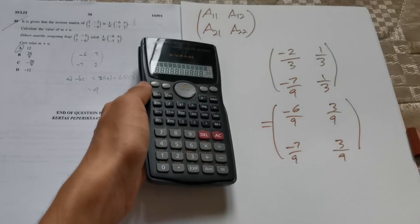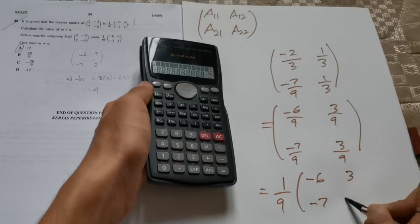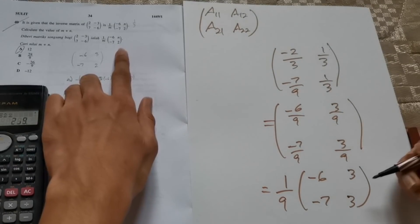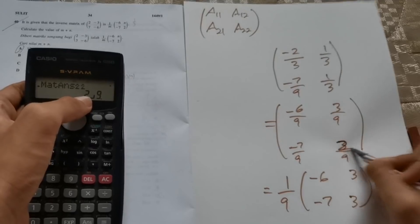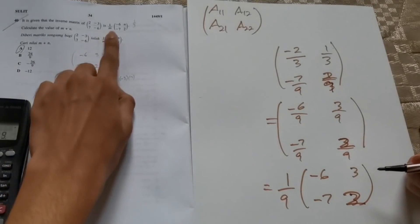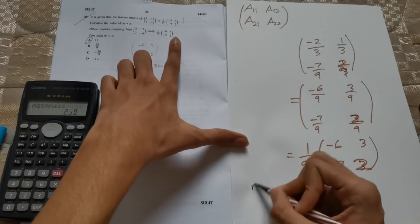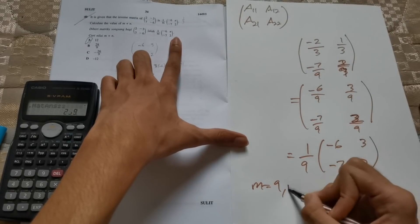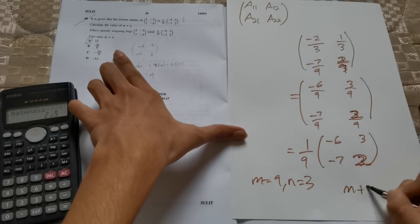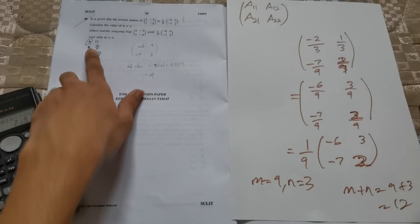Now I want you to standardize this and make everything over 9, which will give you negative 6 over 9, 3 over 9, negative 7 over 9, and 2 over 9. I want you to factorize out the 1 over 9. So you'll get 1 over 9, bracket negative 6, 3, negative 7, 2. Now you compare this to the original equation, which is 1 over M, negative 6, N, negative 7, 2. So M is equals to 9 and N is equals to 3. M plus N is 9 plus 3 equals to 12. Hence the answer is A.